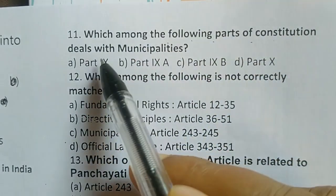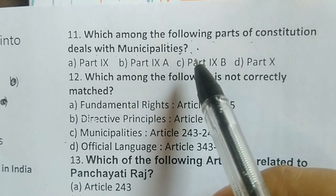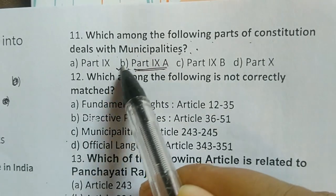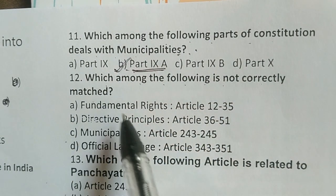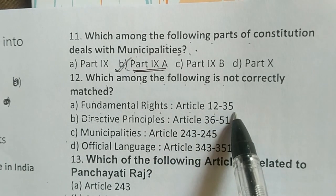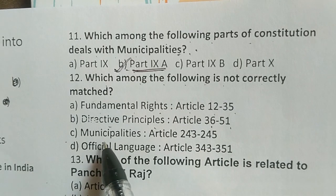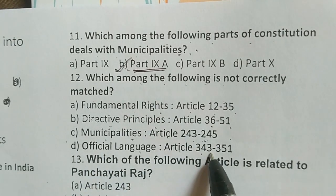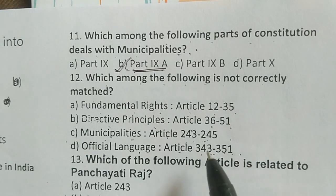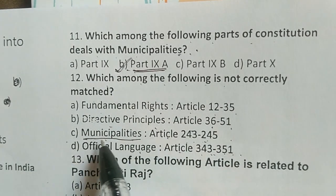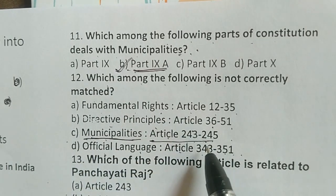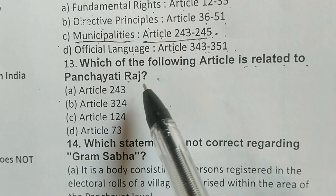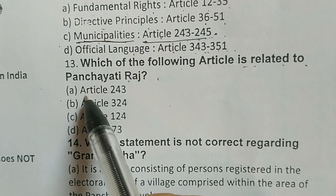Which part of the Constitution deals with municipalities? The correct answer is option B — Part Nine-A. Which among the following is not correctly matched: Fundamental Rights Article 12–35, Directive Principles Article 36–51, municipalities Article 243–245, official languages Article 343–351? The correct answer is municipalities Article 243–245. Which article is related to Panchayati Raj? The correct answer is Article 243.